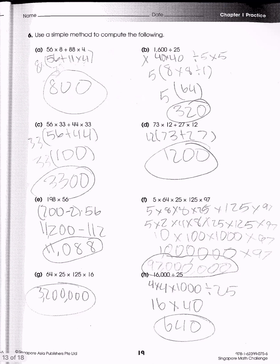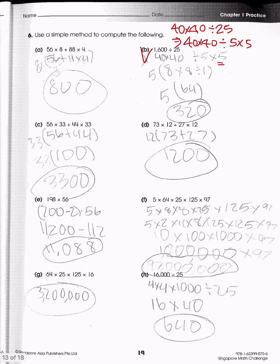We have a lot of practice problems here and I'm only going to go over two because of time. For 1,600 divided by 25: 1,600 can be expressed as 40 times 40, and 25 as 5 times 5. So 40 divided by 5 is 8, and 40 times 5 is 200. Wait — let me redo this properly.